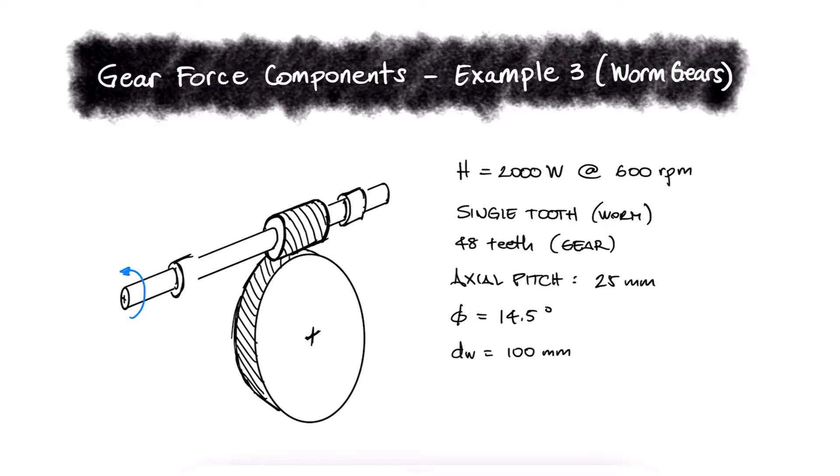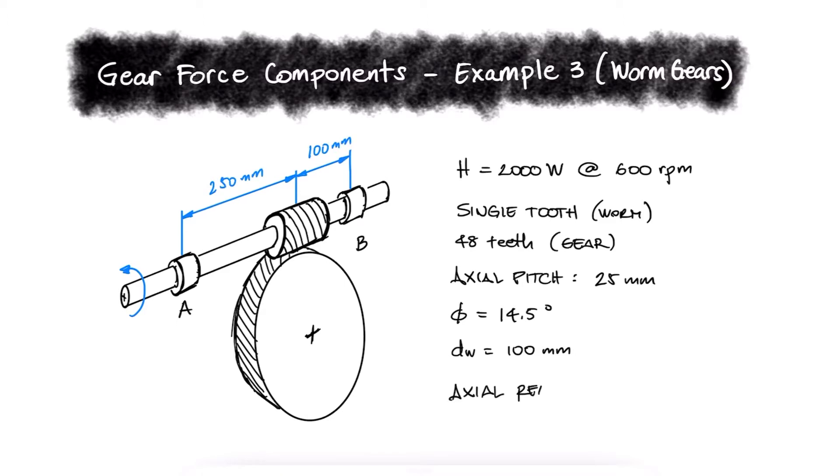The bearings are centered at locations A and B on the worm shaft. What we would like to know is the thrust reaction of bearings A and B.